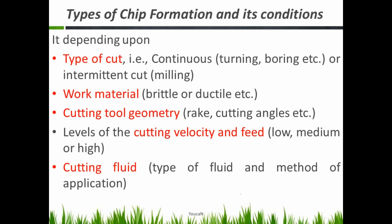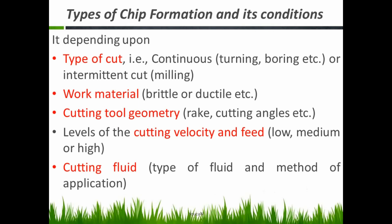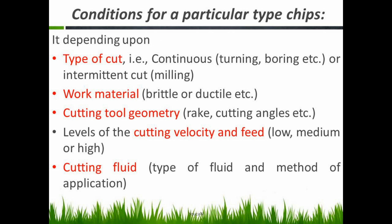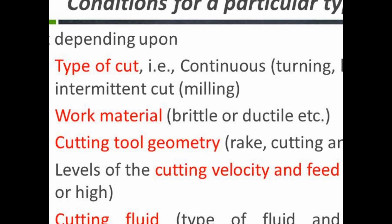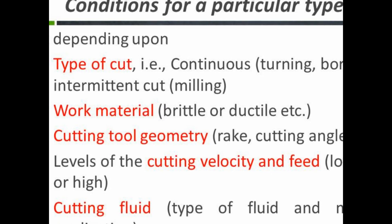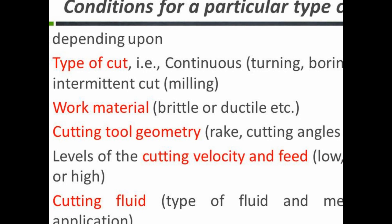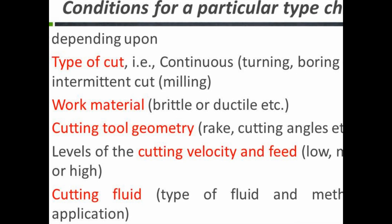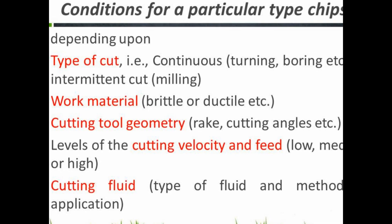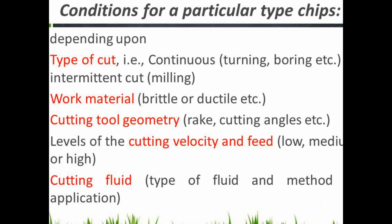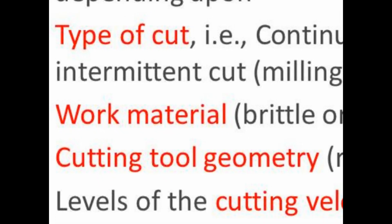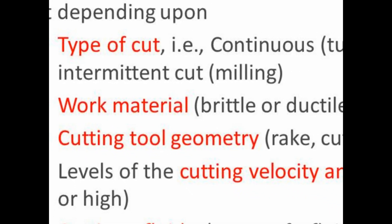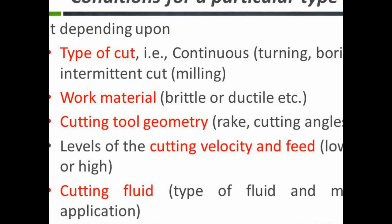These are the various conditions that determine a particular type of chip. Number one: type of cut — whether we are doing a continuous type of cutting process or an intermittent type. In turning and boring it is a continuous type; in milling it is an intermittent cut. The next condition is work material — either it is a ductile material or it is a brittle material.